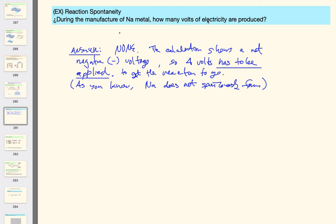During the manufacture of sodium metal, how many volts of electricity are produced? It's a trick question. The answer is none. No voltage is produced. You have to add voltage. Voltage has to be applied. You're not getting any voltage out.